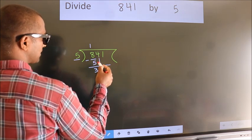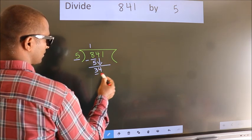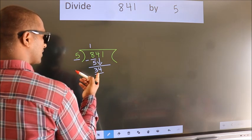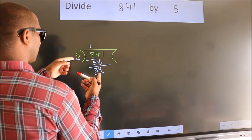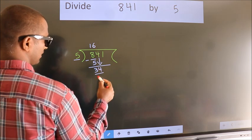bring down the next number. So 4 down, giving us 34. A number close to 34 in the 5 table is 5 times 6 equals 30.